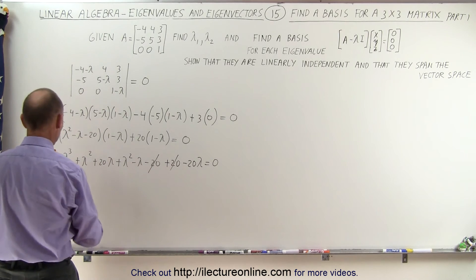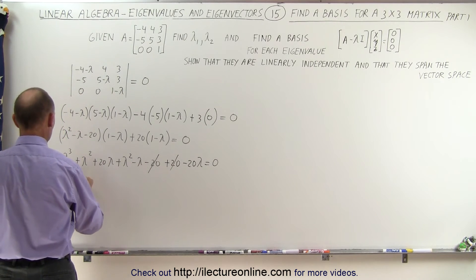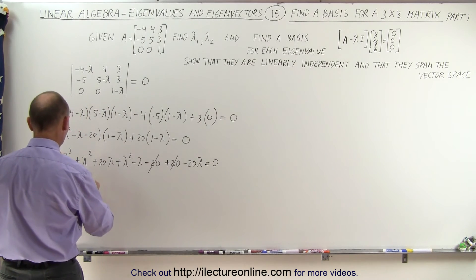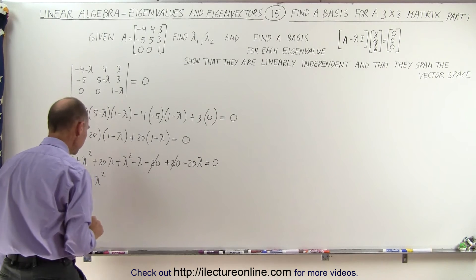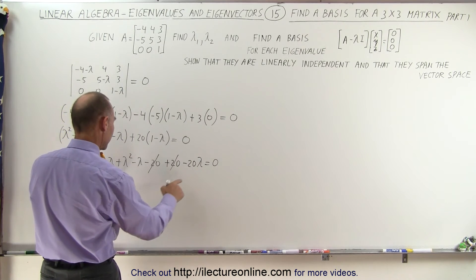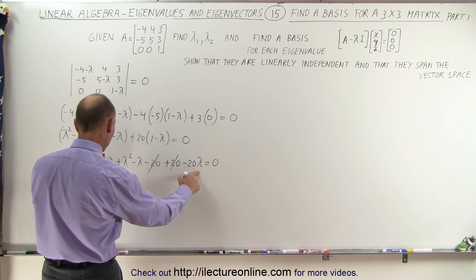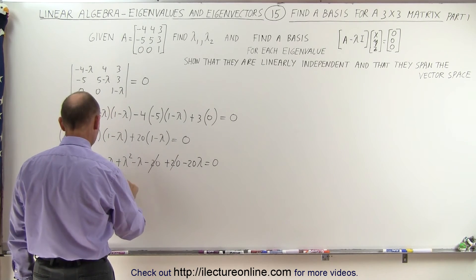All right I'm going to combine like terms and see what we get. Minus lambda cubed plus lambda squared plus lambda squared. That would be plus 2 lambda squared. 20 lambda minus 20 lambda minus lambda. So that would cancel these two out but we still have a minus lambda that equals 0.